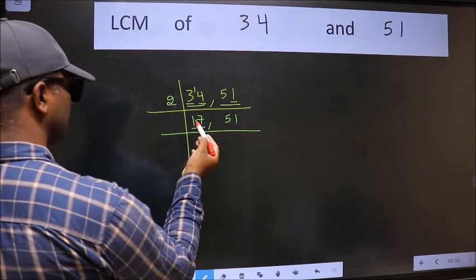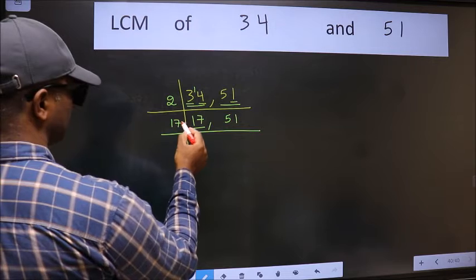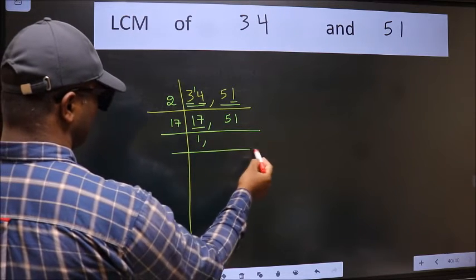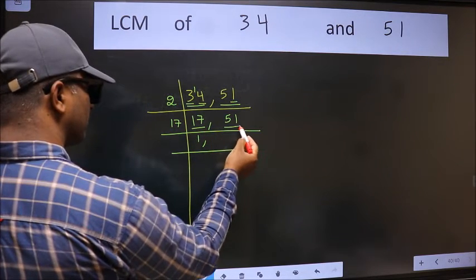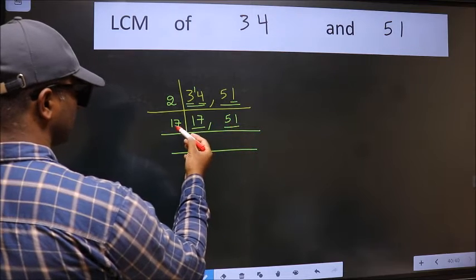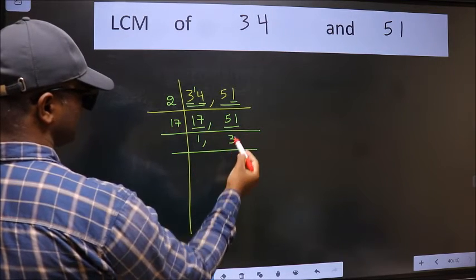Now here we have 17. 17 is a prime number, so 17, 1 times 17. The other number 51. When do we get 51 in the 17 table? 17 times 3 is 51.